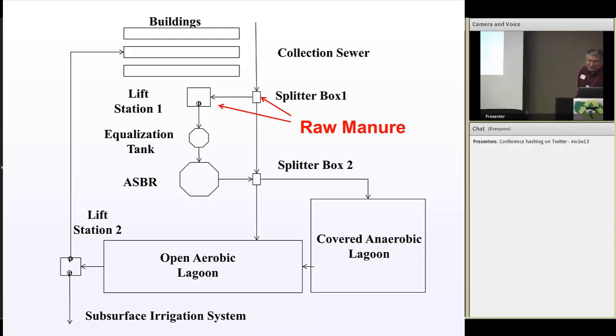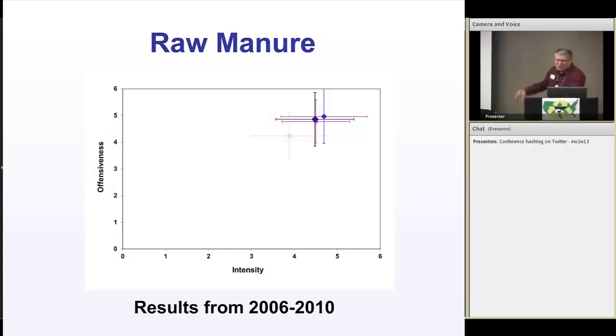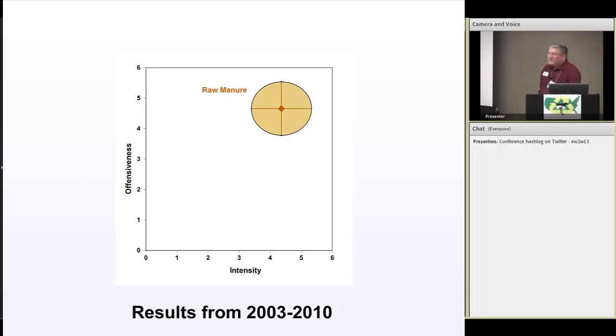The first sample is the raw manure. This is the distribution of 233 people smelling raw manure. It's always up there in that upper right-hand corner. Intensity of four to five. Pretty darn offensive. Not quite knocked the buzzard off the gut wagon offensive. The other thing I like to do is say, this is kind of the cloud of possibility. Actually, it's the 60 percentile possibility, since that's one standard deviation.